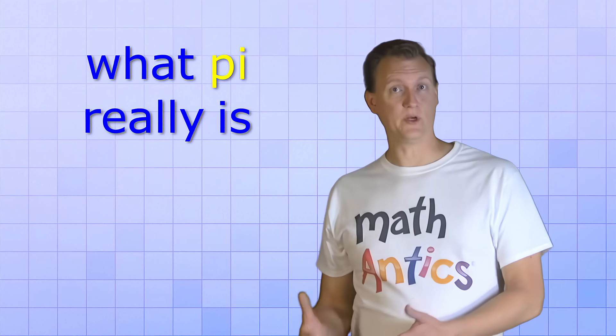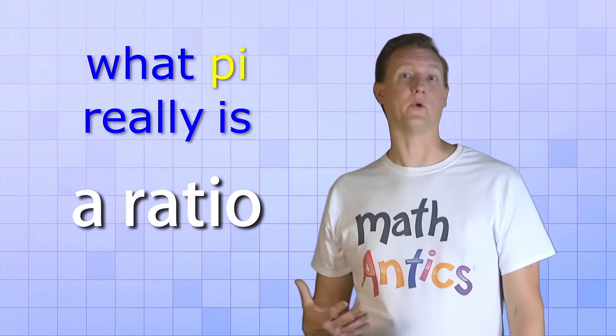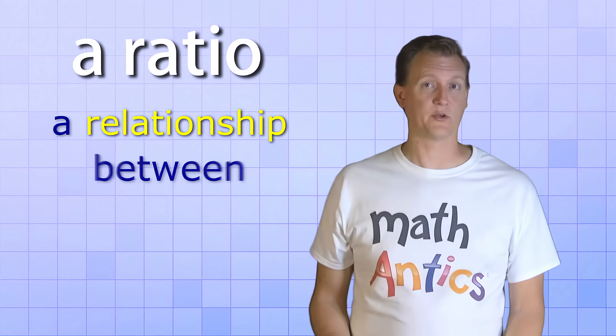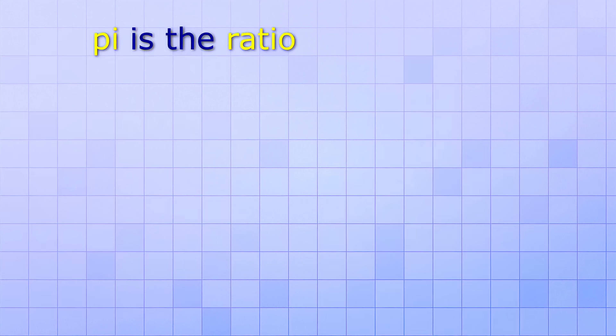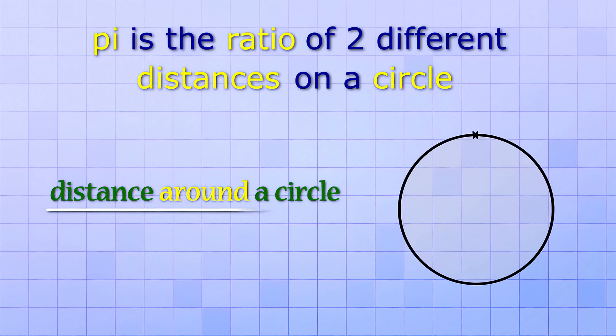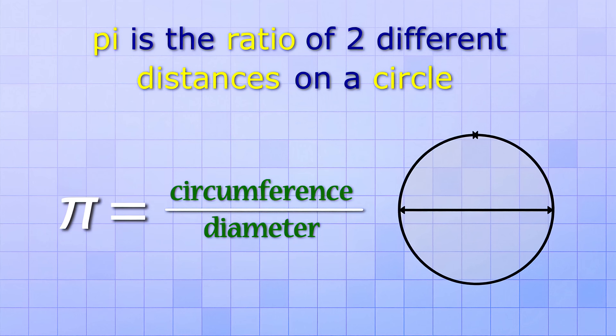But first, let's learn what Pi really is by seeing how it relates to a circle. It turns out that Pi is really a ratio. Now if you're not sure what a ratio is, you can watch our video about them. But basically, a ratio is just a relationship between two numbers that's written like a fraction. Pi is the ratio of two different distances on a circle. It's the ratio of the distance around a circle to the distance across a circle. And what do we call those two distances? Yep, the circumference and the diameter. So Pi is the relationship of the circumference to the diameter.